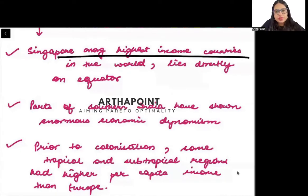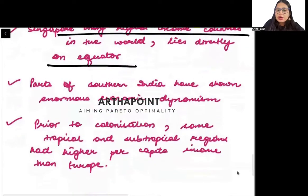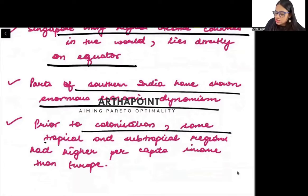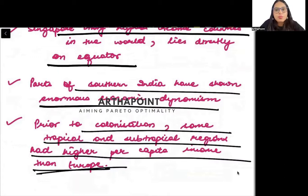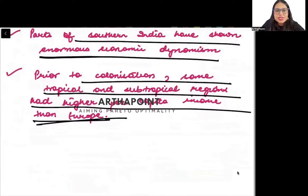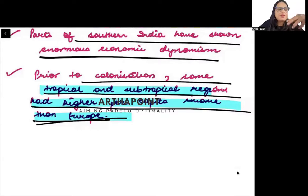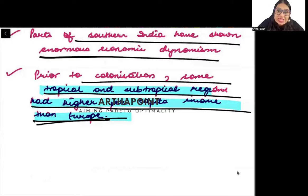For example, Singapore is among the highest income countries, but it lies on the equator in the tropical region. Parts of southern India, especially Kerala, have shown enormous economic dynamism with very high literacy rates. Prior to colonization, the same tropical and subtropical regions had higher per capita income than Europe — the British came to India because India had more resources than them. Before colonization, during the era of Rajas and Maharajas, India's wealth was much greater than many other countries, even while being in this region.